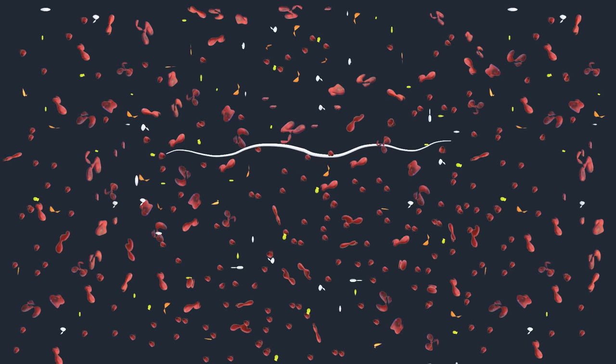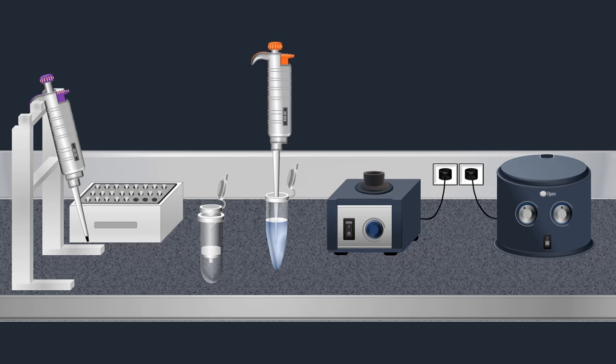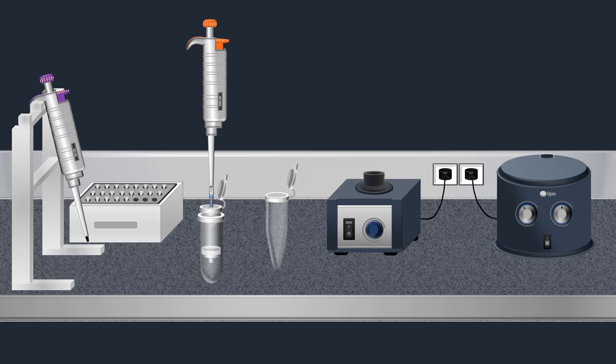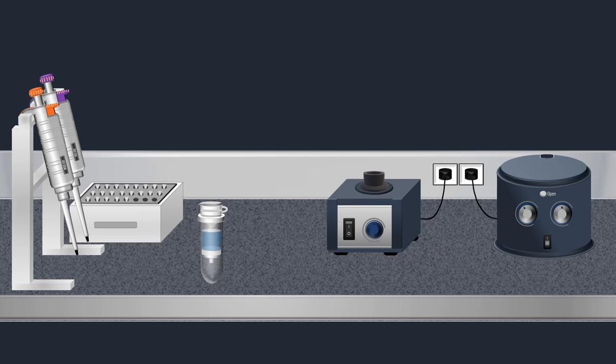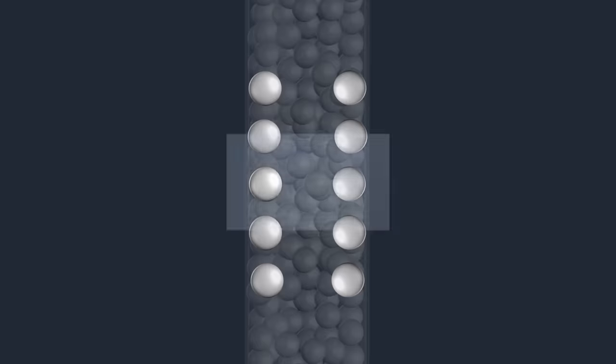Once the sample is lysed, a purification procedure is carried out by using a spin column. The sample is loaded onto the spin column. Then a centrifugation is performed. This procedure is a solid phase extraction method in which the stationary phase consists of a silica matrix.